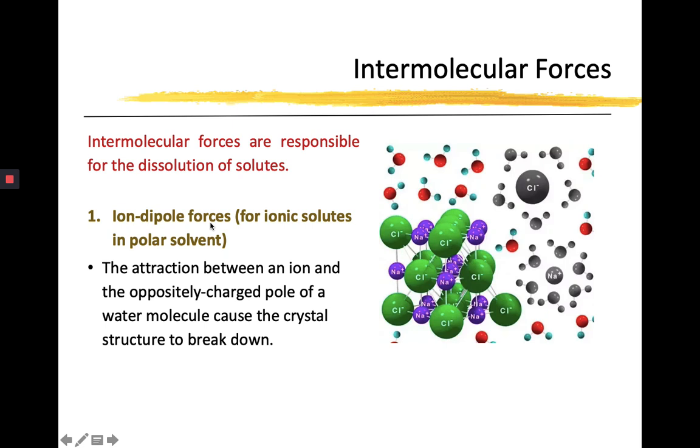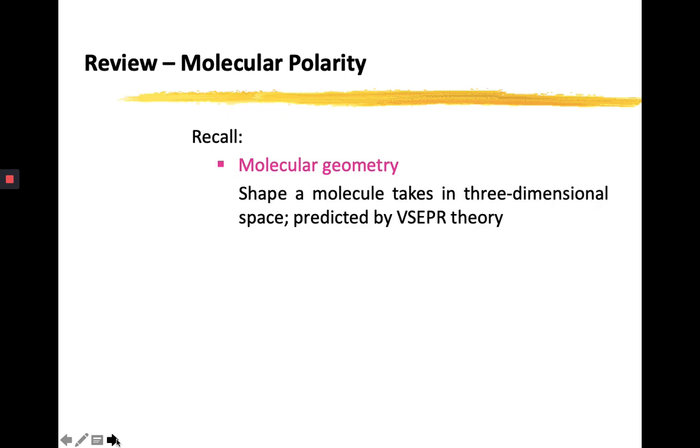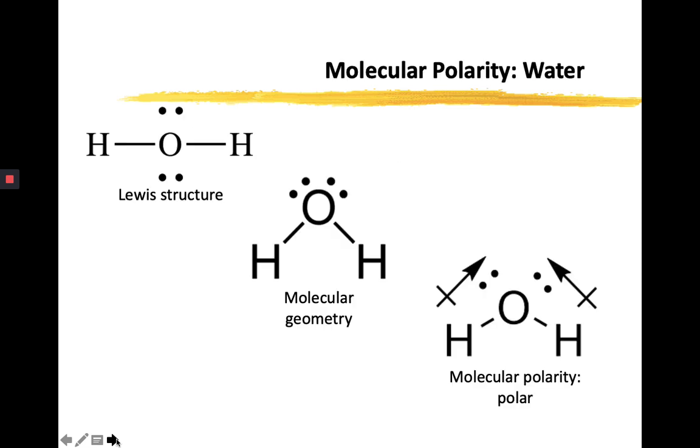It's good to review also on the molecular geometry and molecular polarity. Molecular geometry is the shape a molecule takes in three-dimensional space, and this is predicted by VSEPR theory. Molecular polarity is the overall polarity of a molecule or the net dipole for a particular molecule. One familiar example is water. Because of the lone pairs of electrons for the water molecule, it must have a bent shape. And therefore, there is a net dipole moment going towards the oxygen atom. That makes water polar.